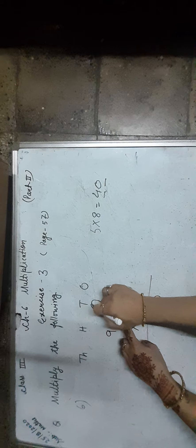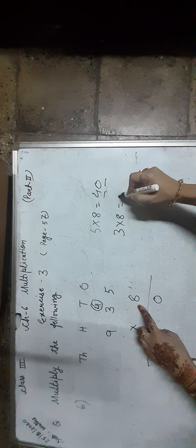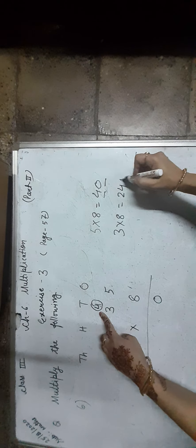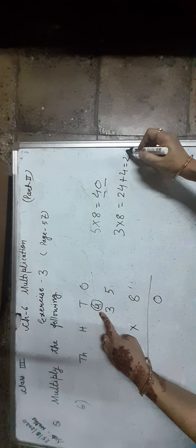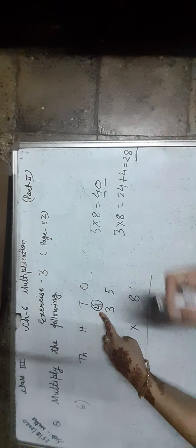Find the product 935 × 8. Start from the 1s place digit: 5 × 8 is equal to 40 — 0 ones and 4 tens. We write 0 in the 1s place and carry 4 to the 10s place. Now, 3 × 8 is equal to 24, plus 4 carry over, together 28.